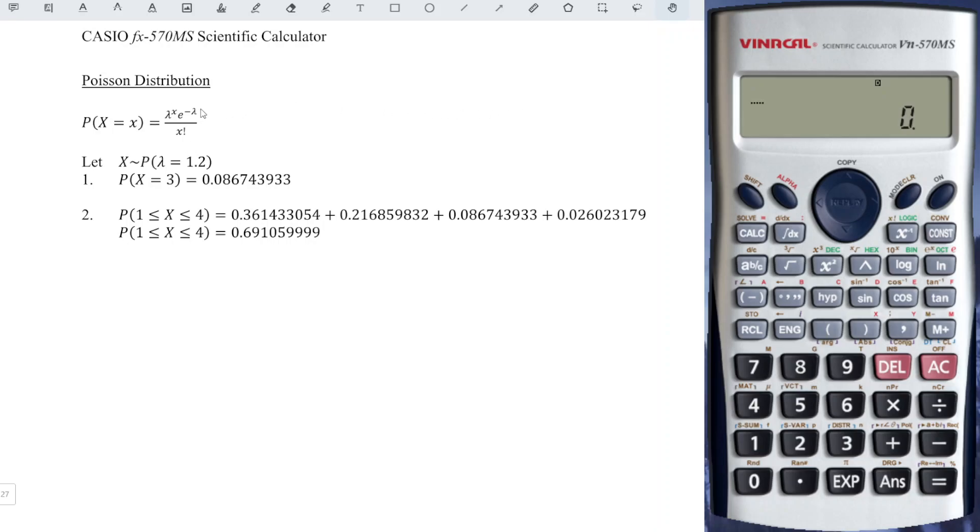First, we key in the function with lambda fixed. For this case, it's 1.2, so we have lambda 1.2 to the power of x. x is unknown, so we press alphabet, close bracket to get x,